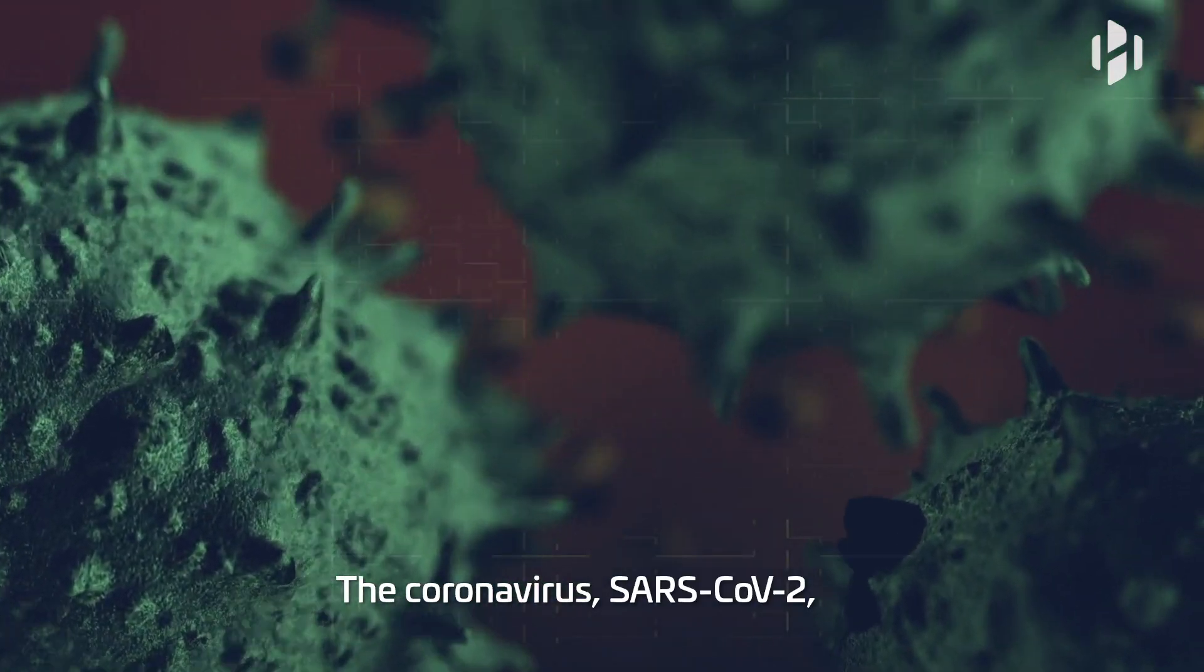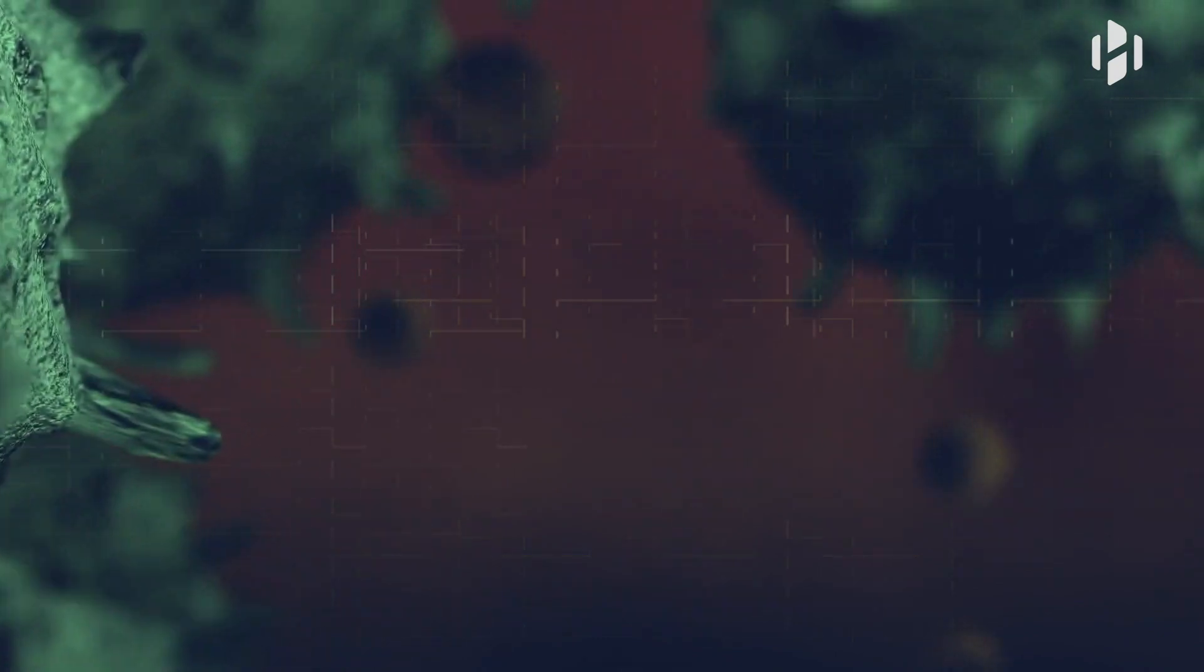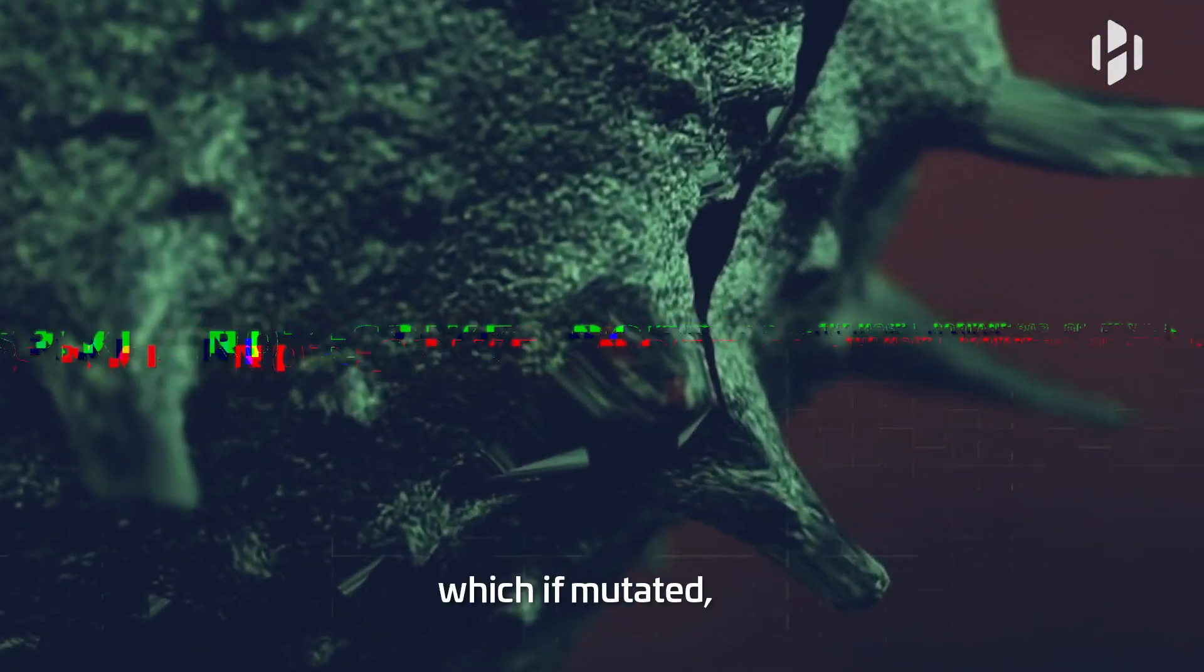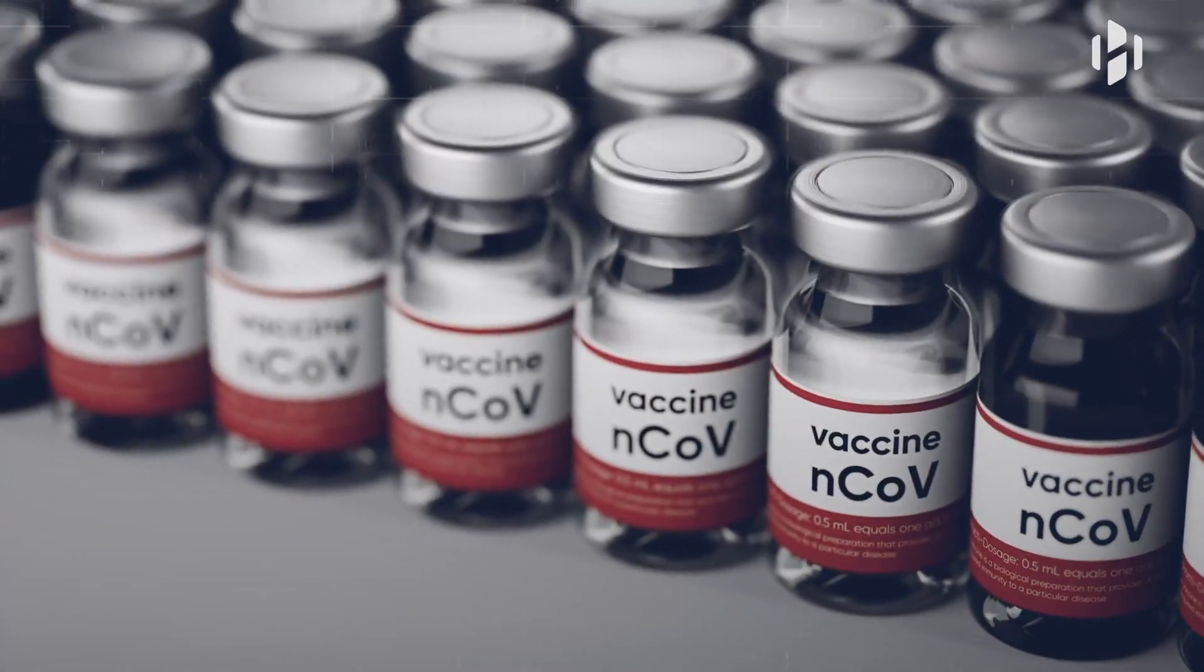The coronavirus SARS-CoV-2 mutations can occur anywhere, but the most important part of the virus is the spike protein, which, if mutated, could delay the development of the vaccine.